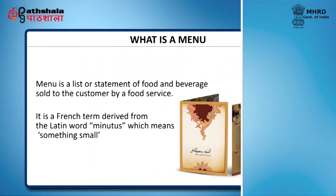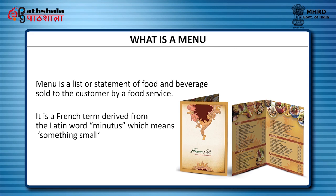Let us start our lesson by knowing that menu is the core component in a food service operation and all the activities revolve around it. A good menu needs to satisfy the customer and also help the management to run a successful business operation. When you go to a restaurant, you first take a look at the card kept on the table or handed over by the waiter. You see a list of the names of the various dishes available and you order your favourite dish. The list of food and beverage you order is called a menu. By definition, menu is a list or statement of food and beverage sold to the customer by a food service.